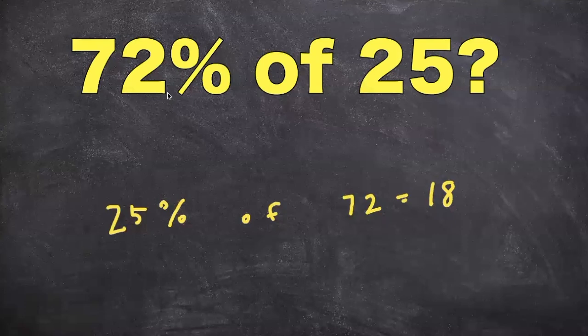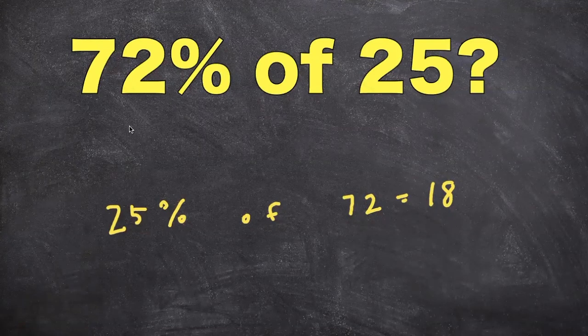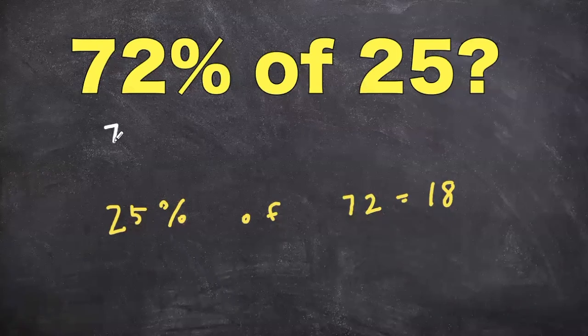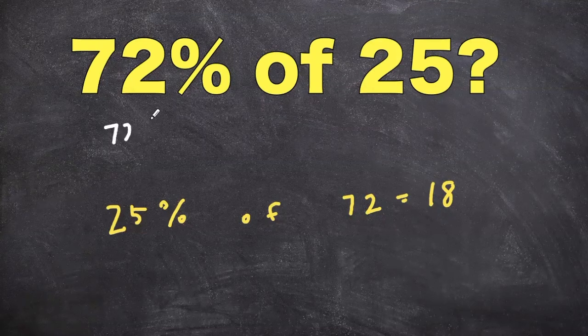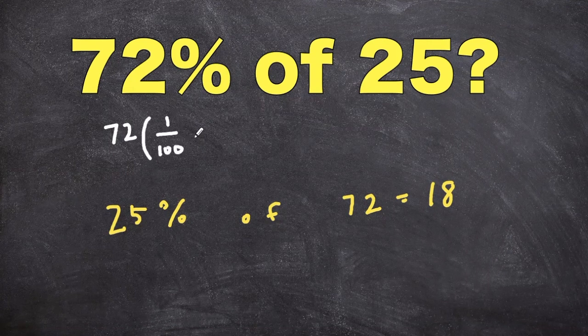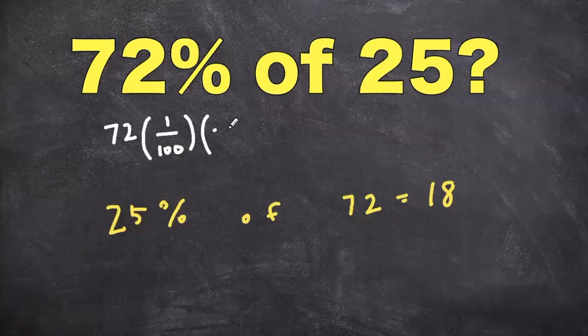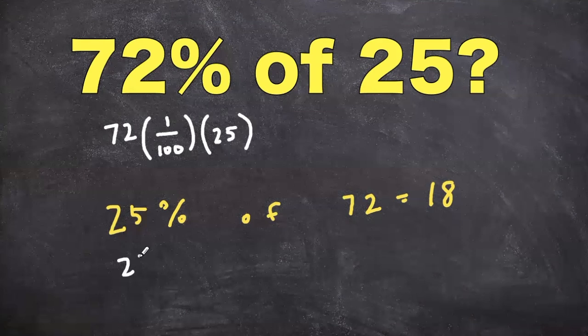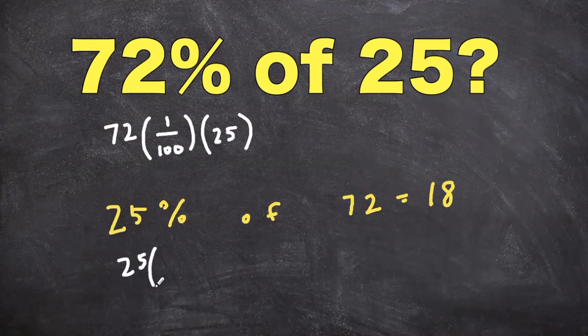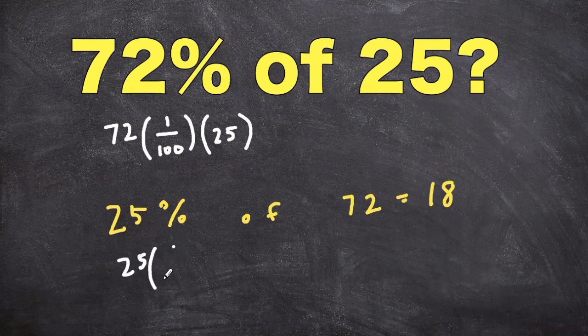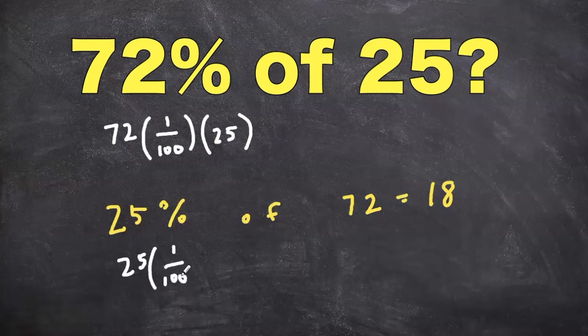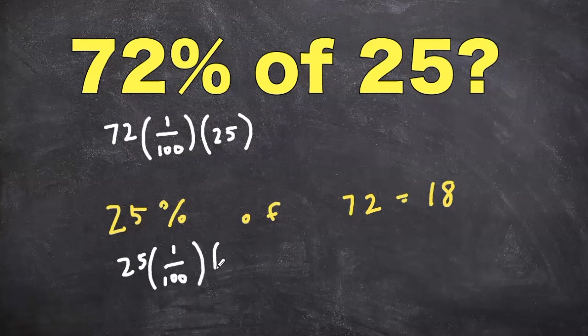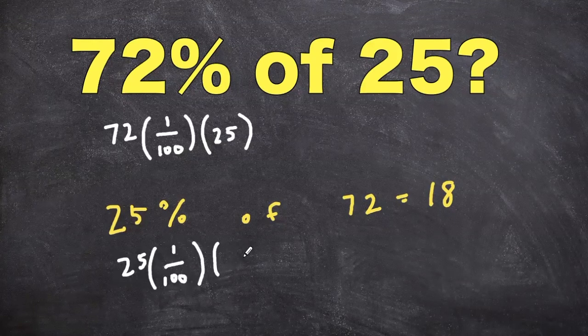Here's the math behind it. So for the first one, if you take 72% of 25, that's like multiplying 72, and if we convert that to a decimal, it's like 1 over 100, or 0.72, times 25. Now for the bottom one, it's going to be 25, and then converting that to a decimal, we're going to multiply that by 1 over 100, or divide by 100, same thing, and then multiply that by 72.